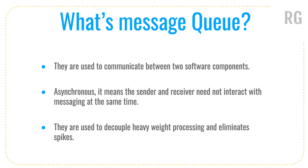In a point-to-point connection, the sender sends a request to application B, and application B does heavyweight processing while the sender has to wait. This leads to heavy transactions between the applications, causing system spikes and the need to increase memory and capacity. To avoid those kinds of issues, you can use a messaging queue.